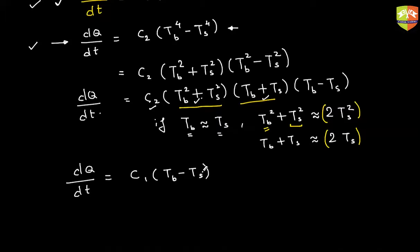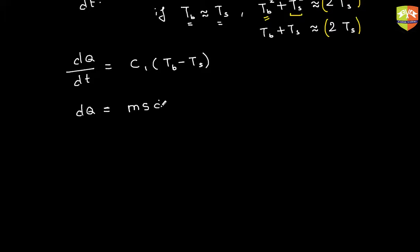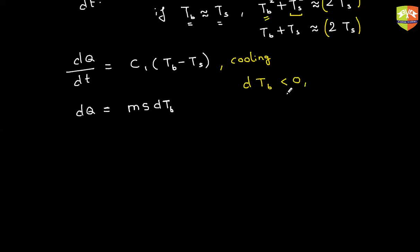Now, how can this be used? If DQ/DT equals C1 times (TB - TS), I can write DQ as M·S·dT. Since we're talking about cooling, dTB is less than zero — the final temperature is less than the initial temperature, so final minus initial is negative.